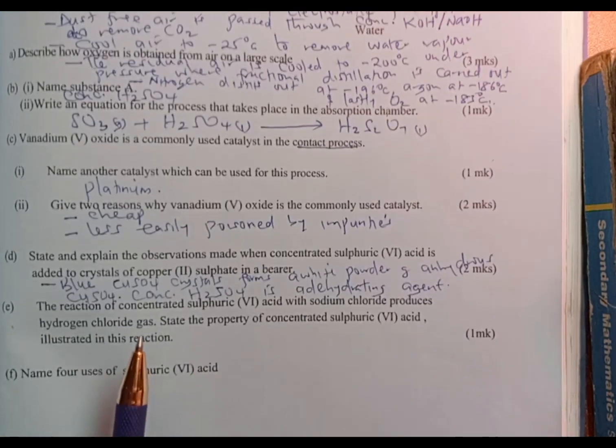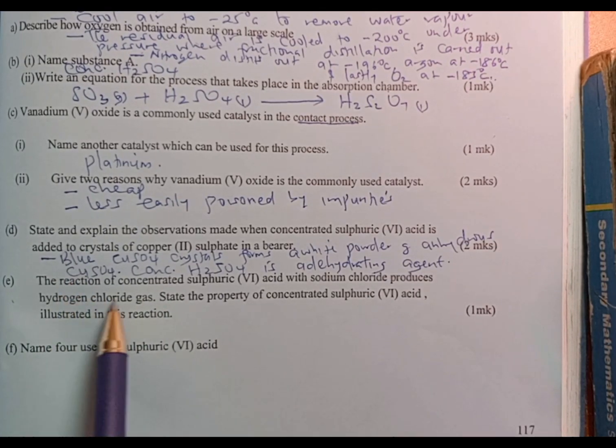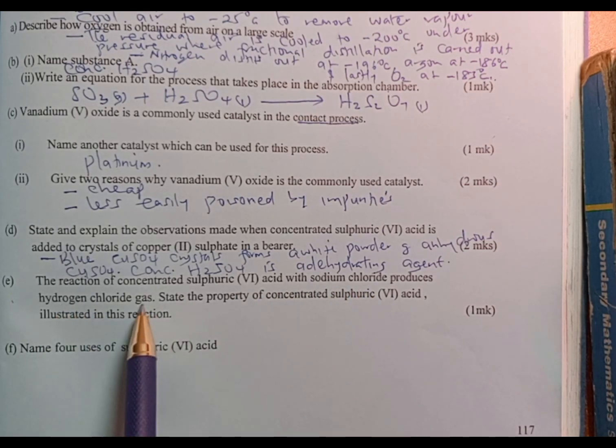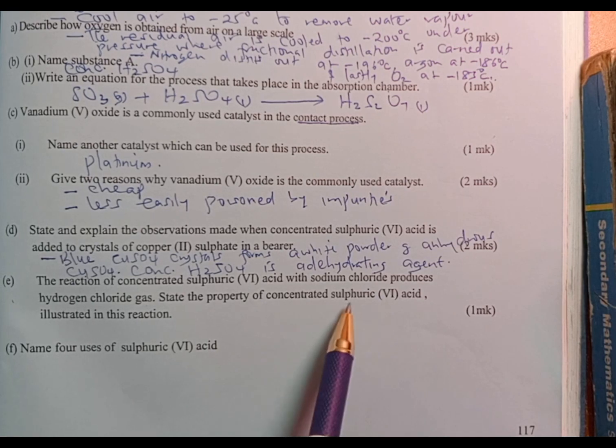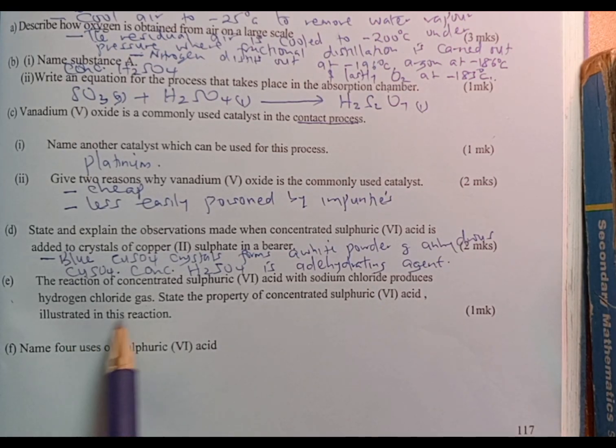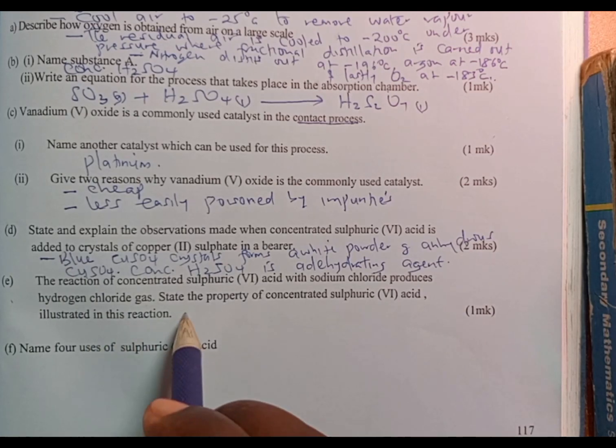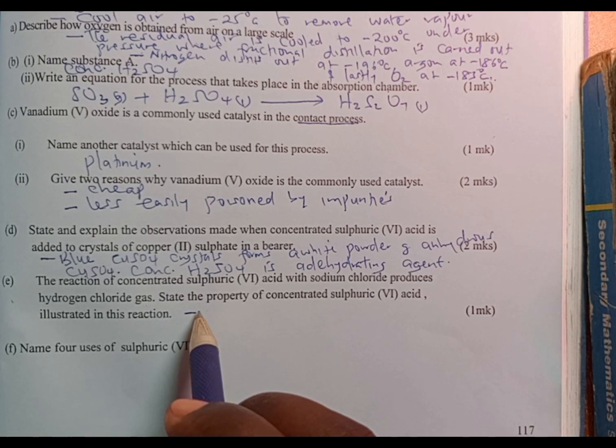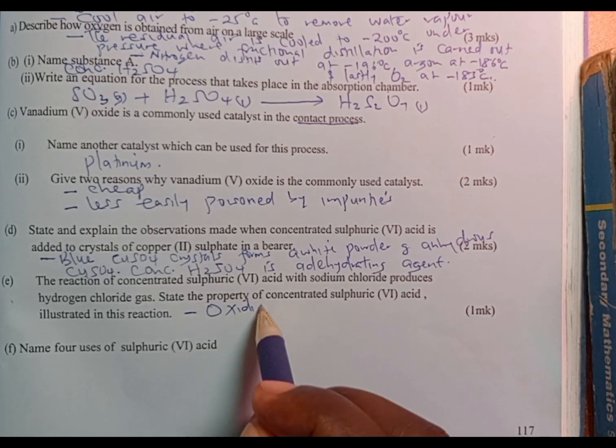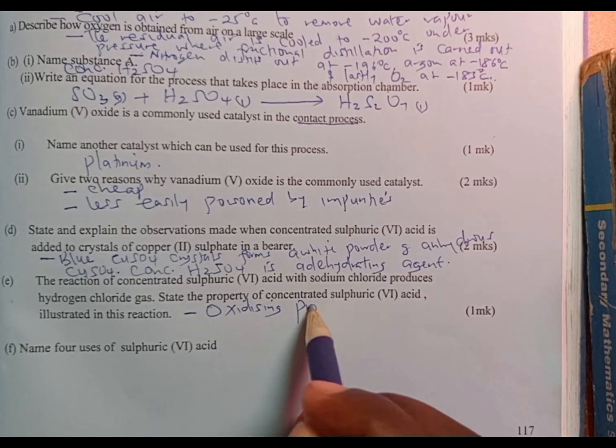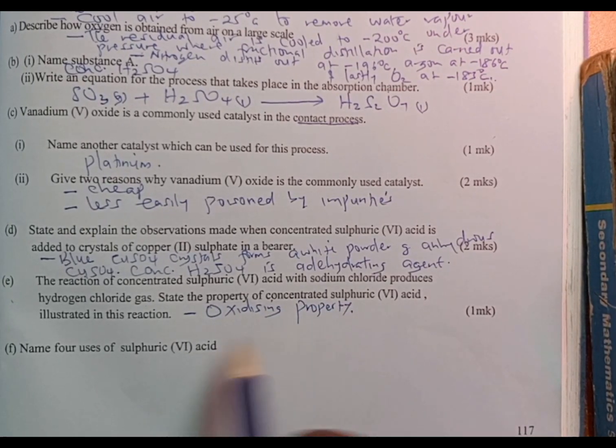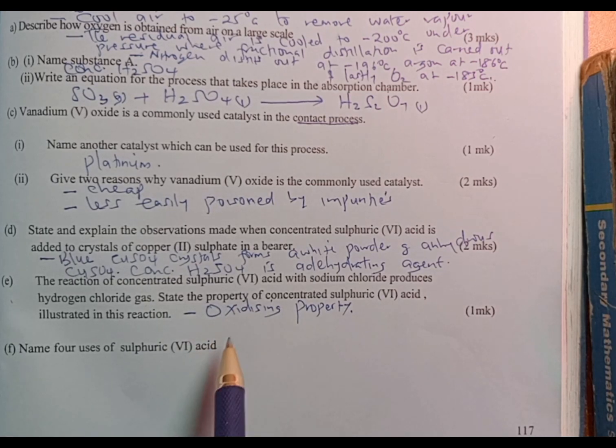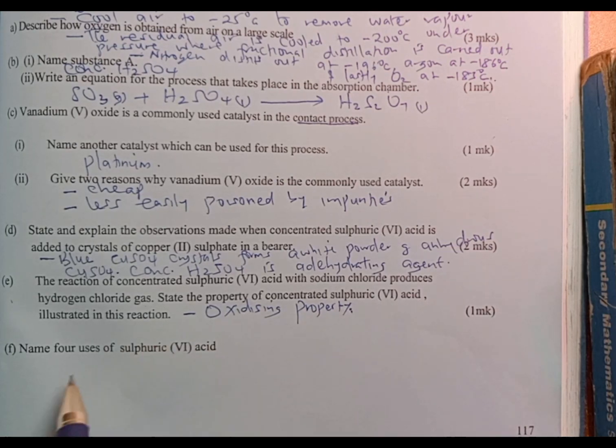Next question: the reaction of concentrated sulfuric acid with sodium chloride produces hydrogen chloride gas. State the property of concentrated sulfuric acid illustrated in this reaction. This is the oxidation property or simply the oxidizing property, where concentrated sulfuric acid acts as a strong oxidizing agent.